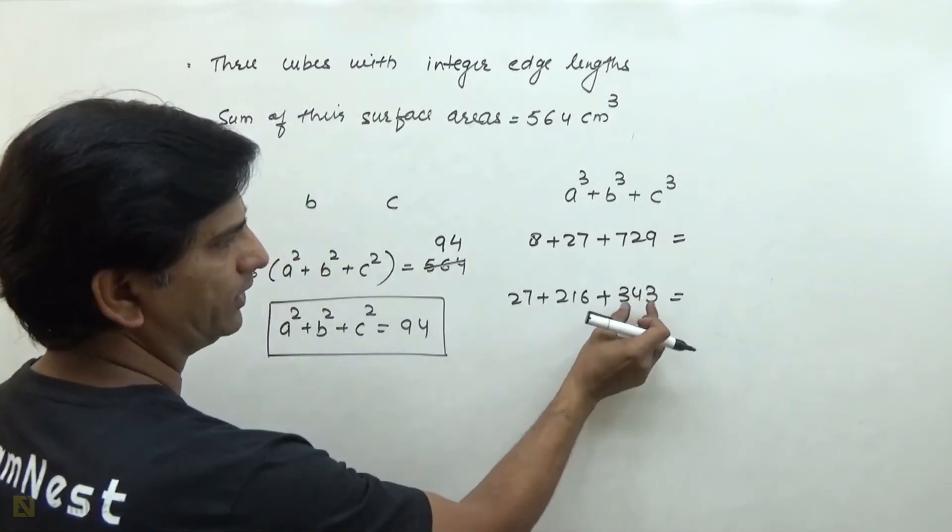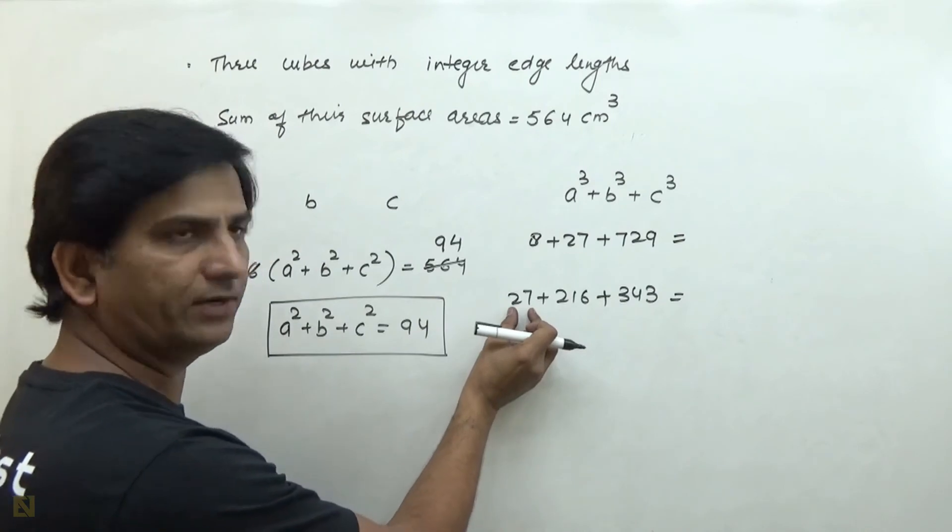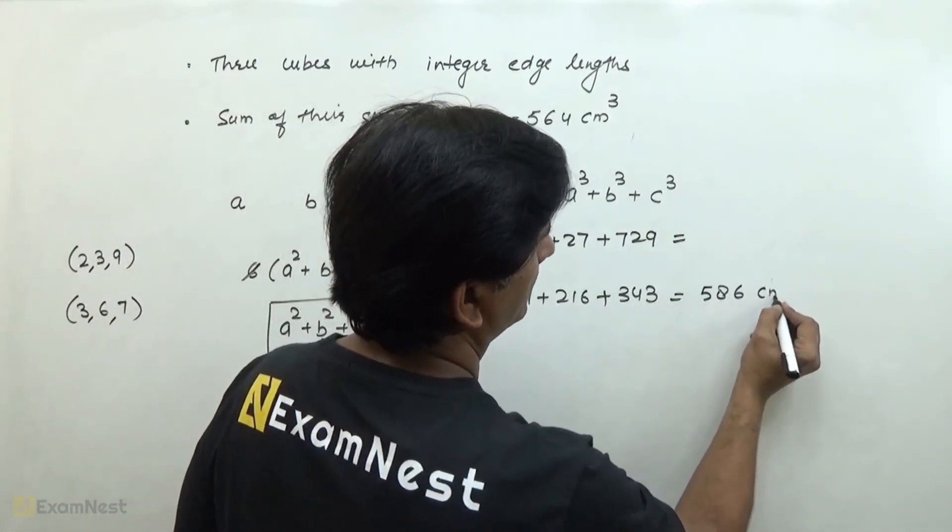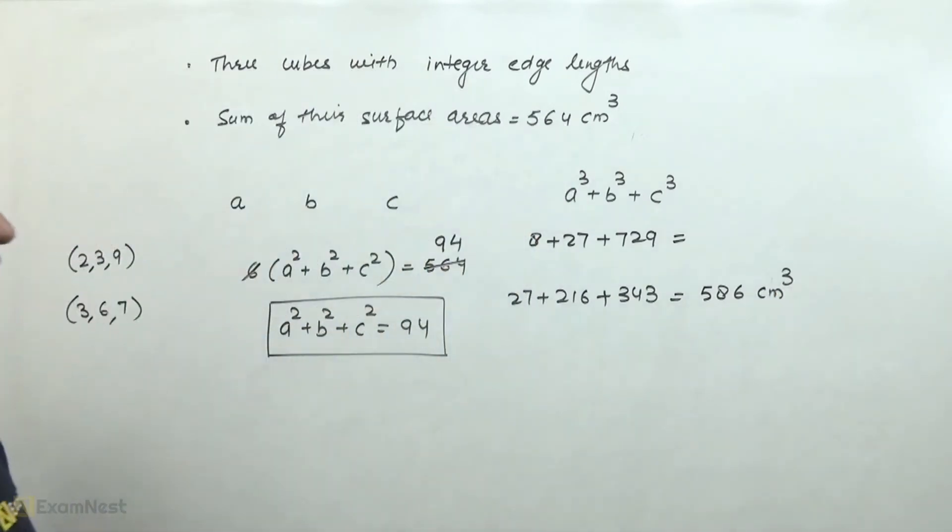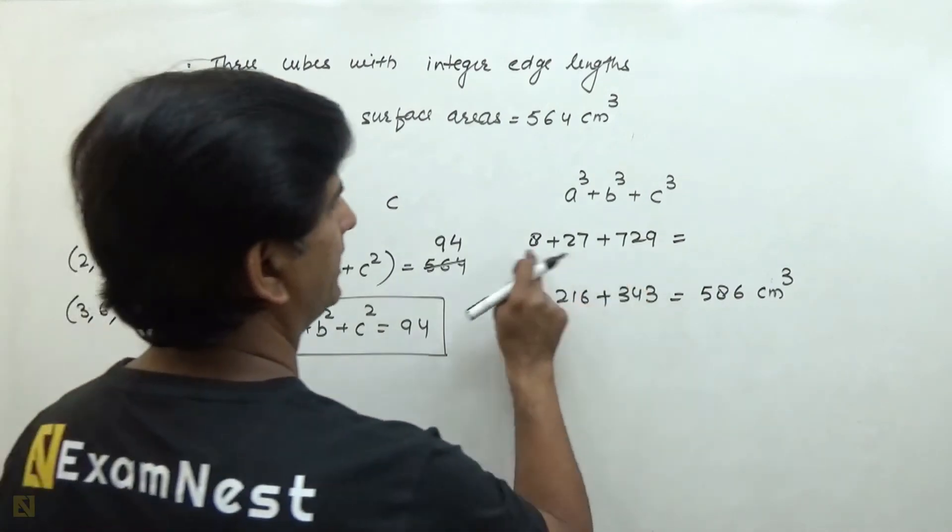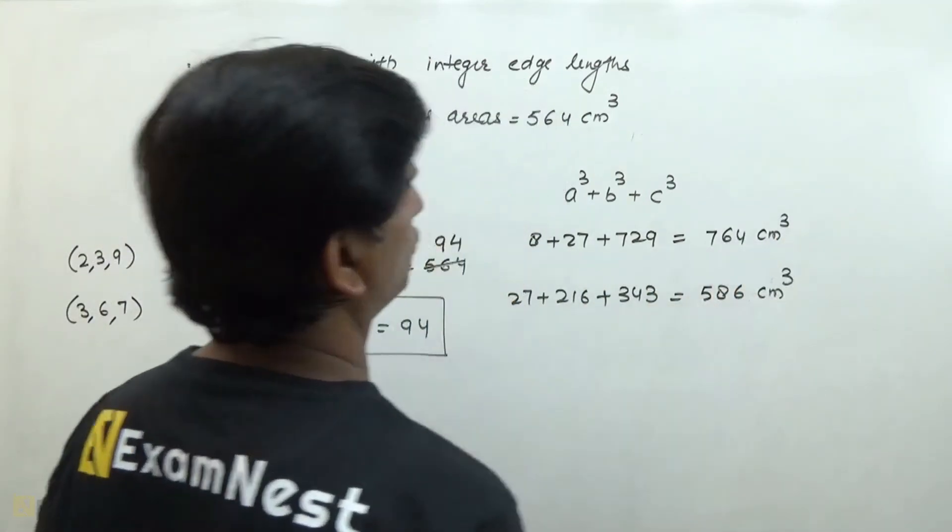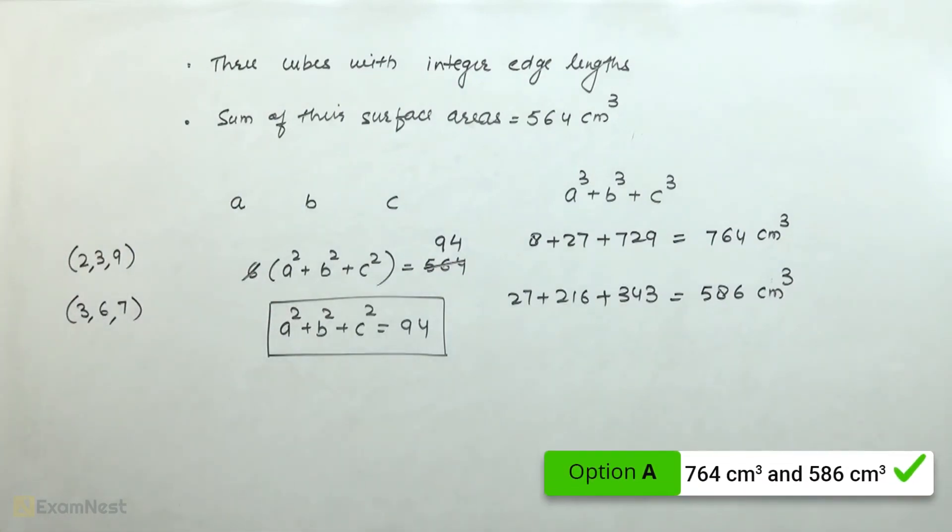We start with these parts. We get 27 and 216 and we get 586. And here the value gives us 764.